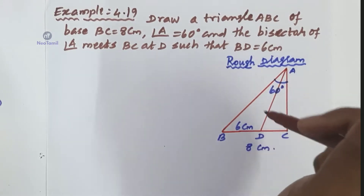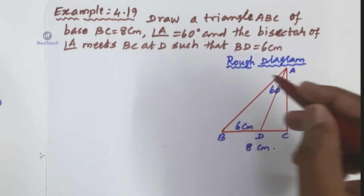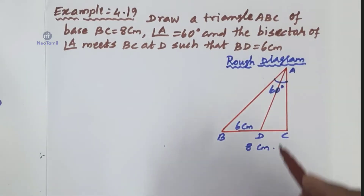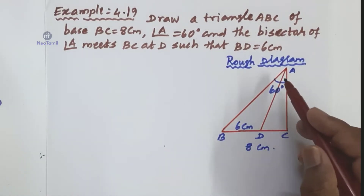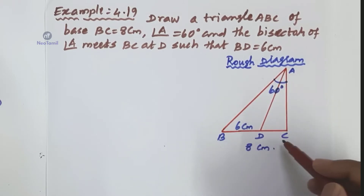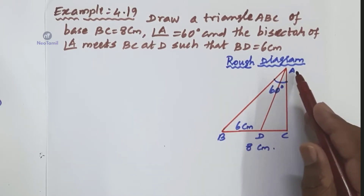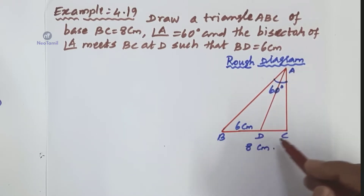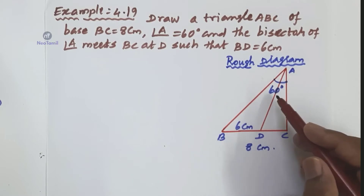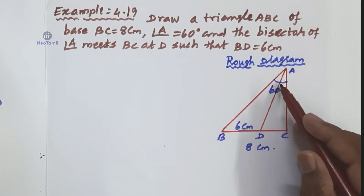I am going to draw a rough diagram. BC is the base, the vertical angle A is at the top of the triangle. Mark angle A as 60 degrees, and base BC is 8 cm.